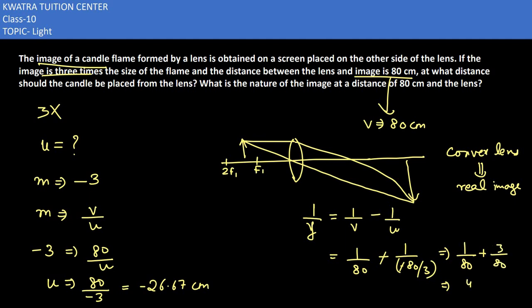When we add, it becomes 4 by 80. Simplifying, we get 1 by 20. So if 1 by F equals 1 by 20, then the focal length is 20 cm. The positive value confirms it is a convex lens. So this is your answer for this question.